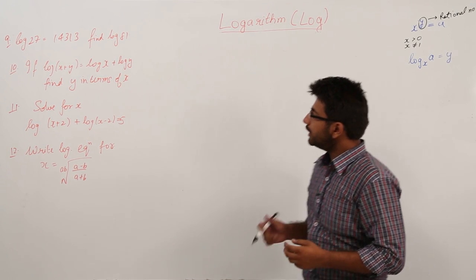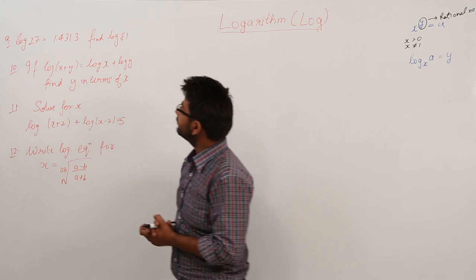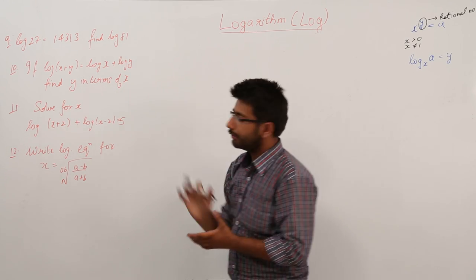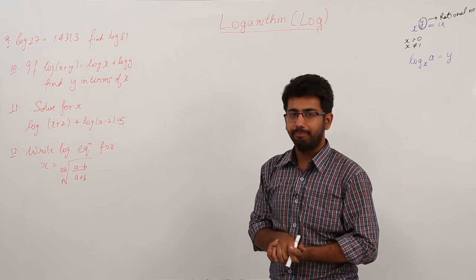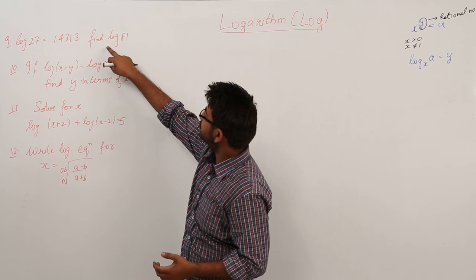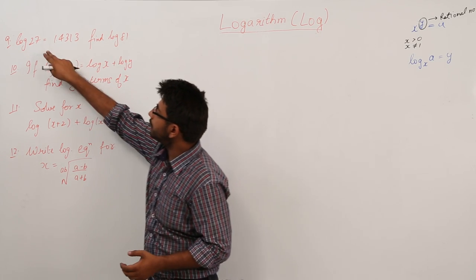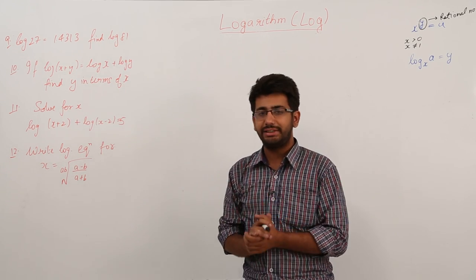In the right question, we have been given the value of log 27 and we have to find out the value of log 81. That means we have to express the log 81 in terms of log 27.